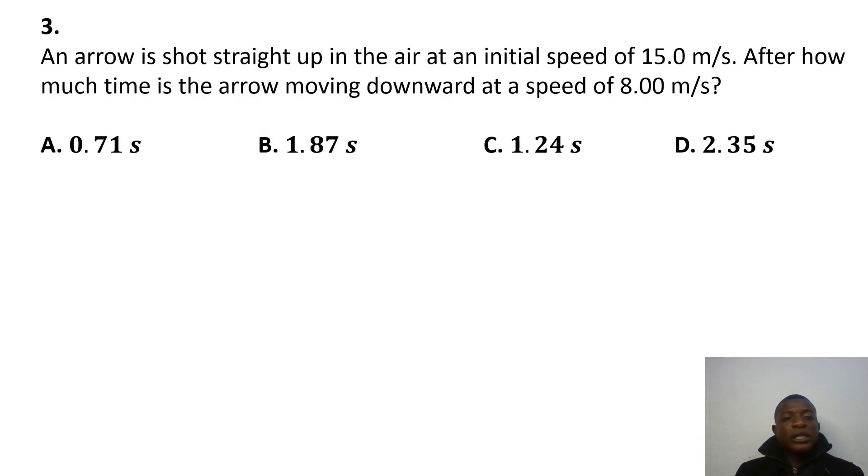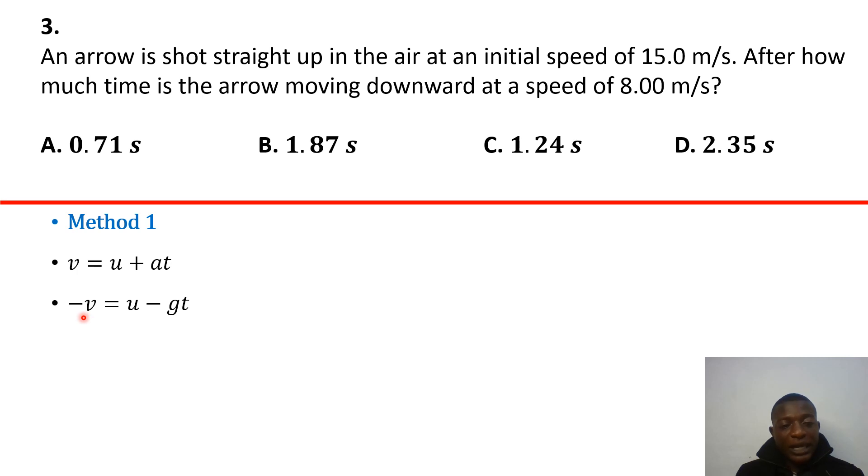So question 3 says, an arrow is shot straight up in the air at an initial speed of 15 meters per second, after how much time is the arrow moving downward at the speed of 8 meters per second? Okay, so right here, you just really have to solve in two ways. So the first way is just use equations of motion, and then use the vector approach. So initial velocity is upward, and final velocity is traveling downwards. If you realize the velocity has changed direction, so it's now using the negative, because now you're coming downwards.